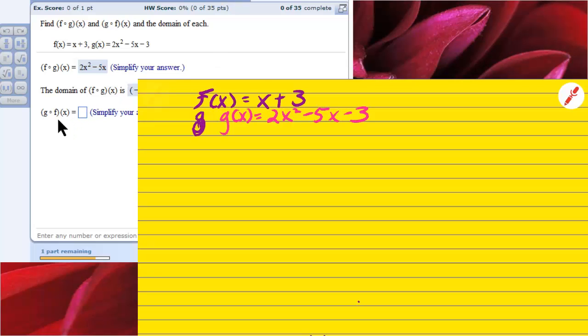So, we're going to be looking for g of f of x, which means we're going to have 2 times f of x squared minus 5 times f of x minus 3. So we have to ask ourselves, what is f of x? f of x, you recall, is x plus 3.